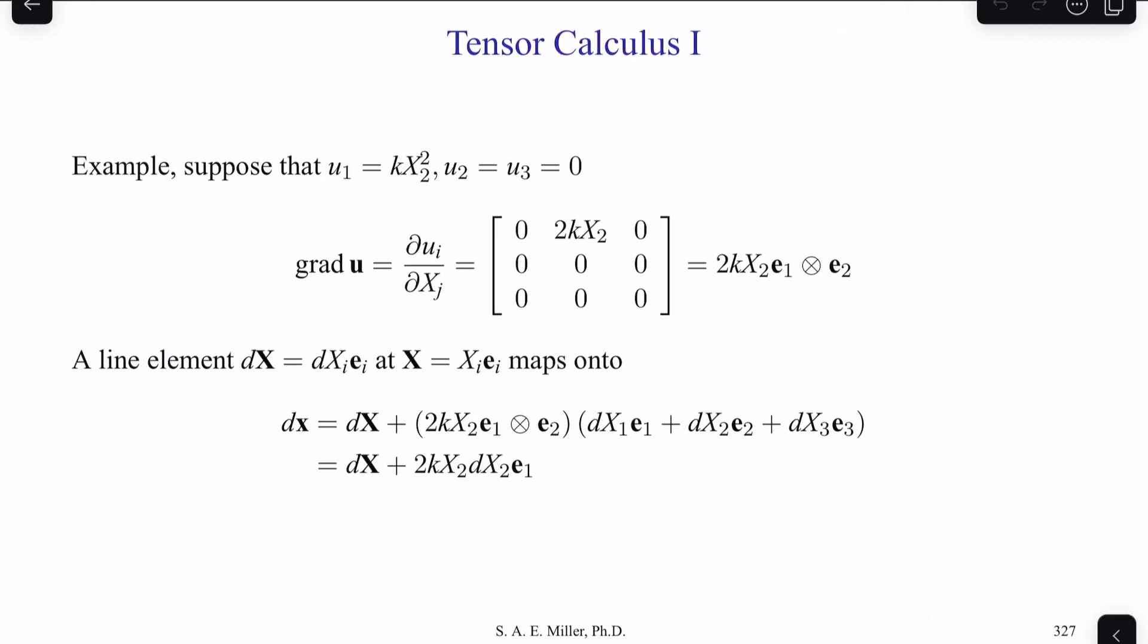Let's look more at tensor calculus. Suppose u_1 = kx_2^2 and u_2 and u_3 are zero in the velocity field. Then the gradient of u will be ∂u_i/∂x_j, which equals 2kx_2 e_1 ⊗ e_2. A particular line element dx = dx_1 e_1 + dx_2 e_2 + dx_3 e_3 will map to dx + 2kx_2(e_1 ⊗ e_2)(dx_1 e_1 + dx_2 e_2 + dx_3 e_3), which reduces to dx + 2kx_2 dx_2 e_1.